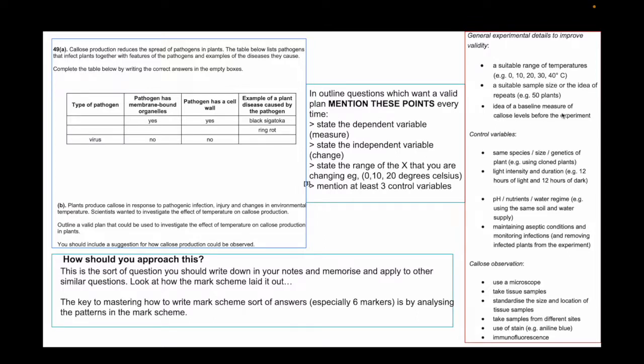This is quite an interesting concept: idea of a baseline measure of callous levels before the experiment. That answer actually pops up in many questions when I was doing my past papers. It's not going to come up as callous, but it might come up as water concentration in a potato before and after adding something to it, for example. So that is a sentence you should write in your notes and adapt wherever you think deserves that sentence to be written. Again, look, they have a whole section of control variables. That's how important it is, because that's the only way you can standardize the experiment.